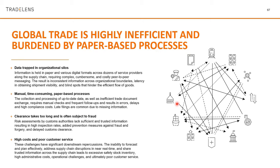If a carrier is delayed by two days, that information is now available on the blockchain, so the inland carrier doesn't need to come and wait unnecessarily. If all milestones are tracked, the inland carrier can plan: 'The shipment hasn't reached the destination port yet — let me wait two more days before allocating a truck.' This cuts down inefficiencies in the system by giving global visibility into exactly where the shipment is at any moment.